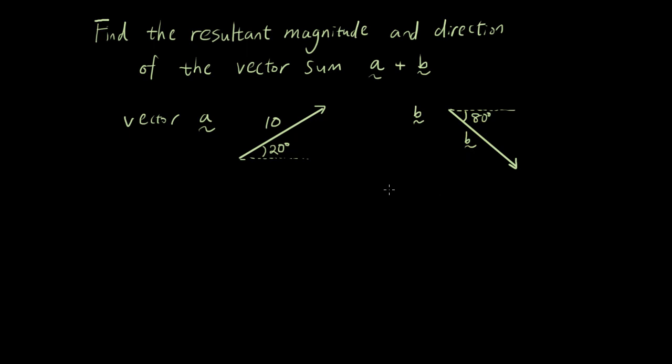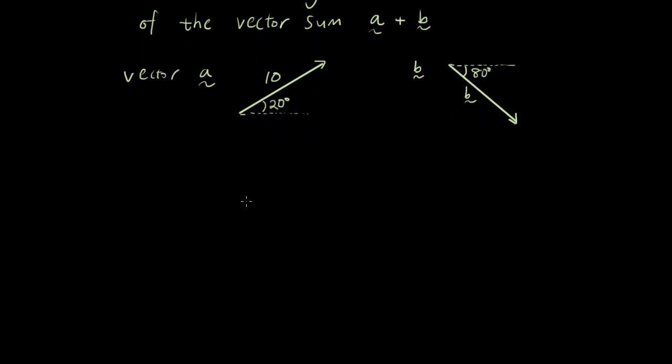So now that we have two vectors, how do we add them together? Well, it's going to look something like this. That's vector A. And then it's going to go down. That's vector B. And that's vector C, which is the sum, or you can say A plus B.